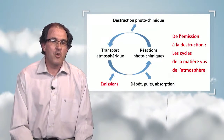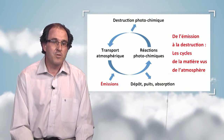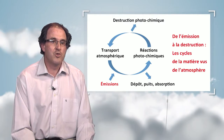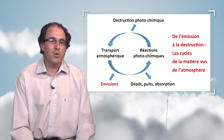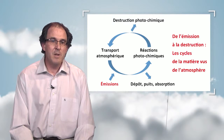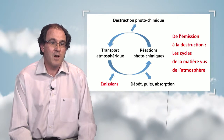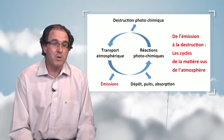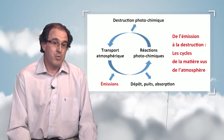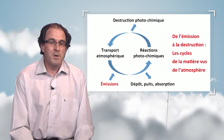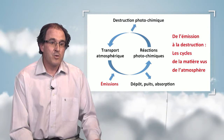When a compound is released on the surface, it will be transported into the atmosphere through different processes: turbulence, wind, and convection. It may also be destroyed by several processes: chemical reactions, photochemical reactions in the highest atmosphere, and it may be deposited or absorbed by the ocean and the continental surfaces.